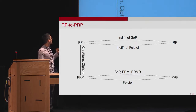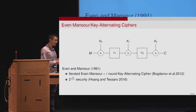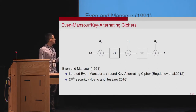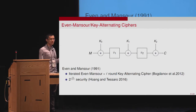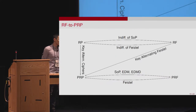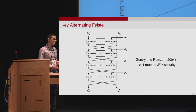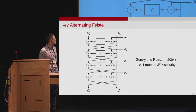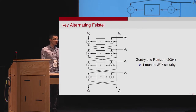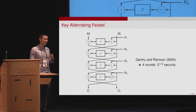The first case is building a PRP from RP, which is already considered by the Even-Mansour construction or the key alternating ciphers, introduced in 1991 by Even and Mansour. In 2012, the concept of key alternating ciphers was introduced, which generalized the Even-Mansour cipher. In 2016, Chen and Steinberger showed the tight security bounds of the key alternating ciphers. The next case is the conversion from RF to PRF using the key alternating Feistel cipher, introduced in 2004 by Treger and Slamsan, combining Feistel networks with the Even-Mansour construction, showing the resulting construction is birthday-bound secure with four rounds.